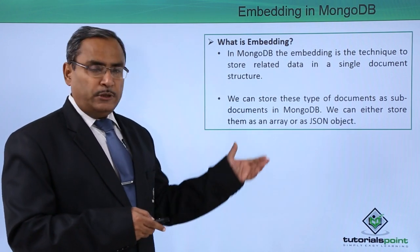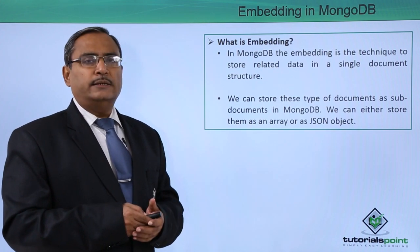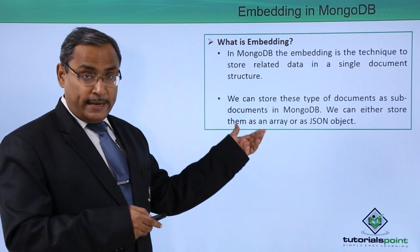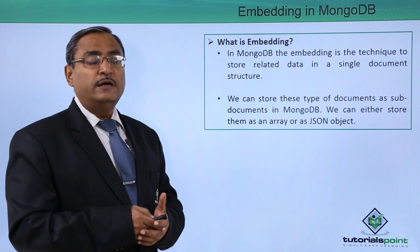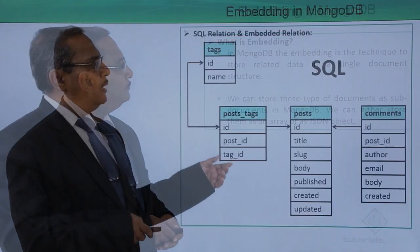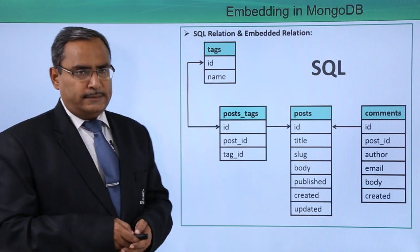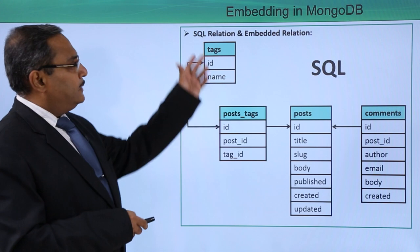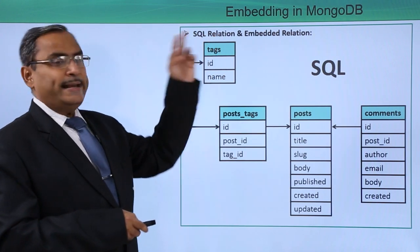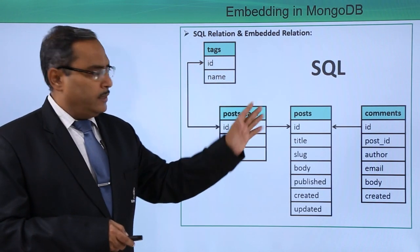These particular documents can be stored either in the form of a JSON object or an array consisting of JSON objects. Now let us go through one example — a comparison between SQL relational structure and embedded relation in MongoDB.